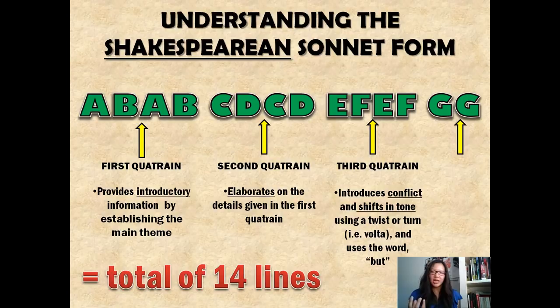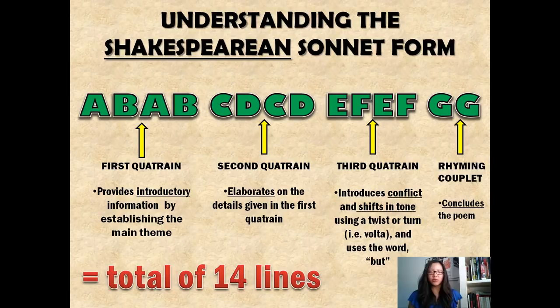Finally, ending with a rhyming couplet, the last two lines of the sonnet provide a conclusion to the theme that was introduced in the first quatrain. It also provides some sort of resolution, or it may possibly provide a contradiction to what was stated in the first three stanzas. A sonnet fulfills these four different criteria of having first, second, and third quatrains and a rhyming couplet at the end — all totaling 14 lines.